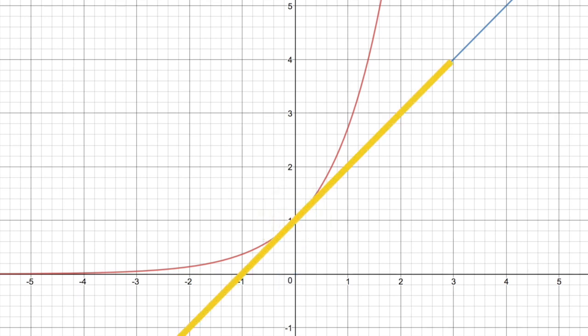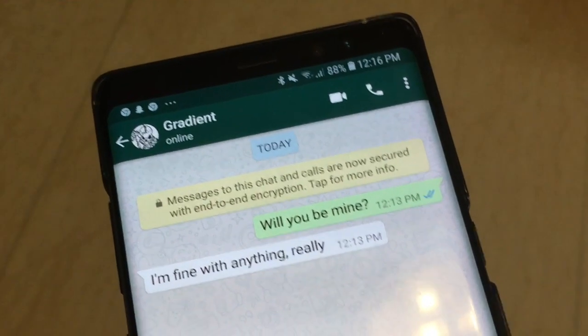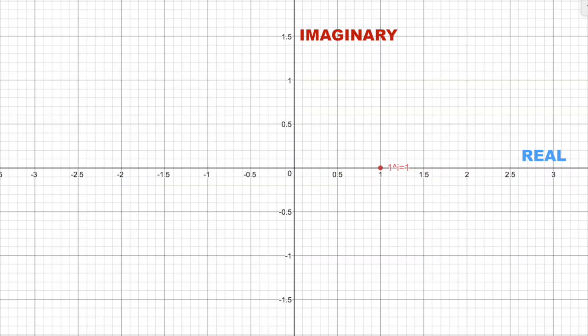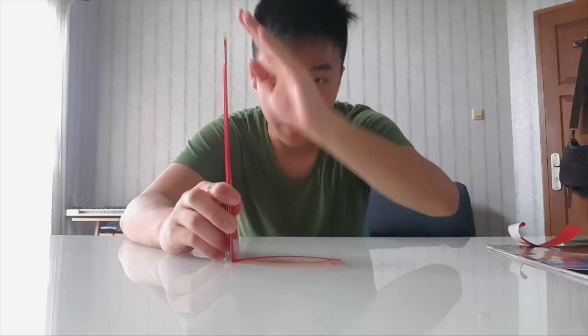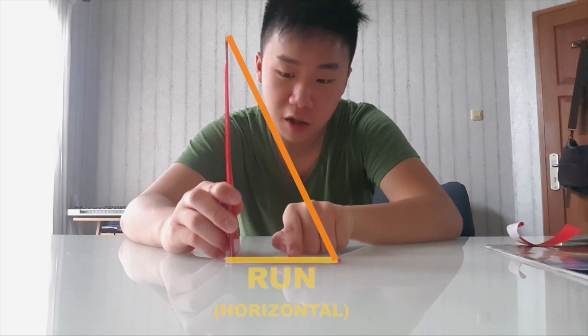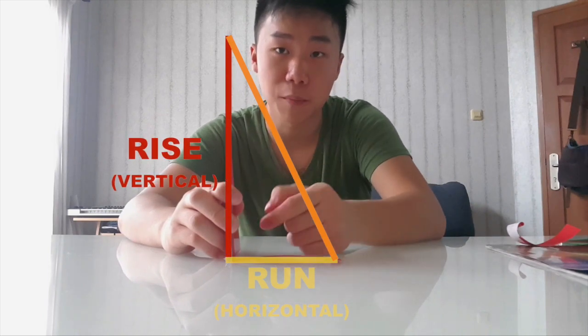The gradient is the only two-dimensional piece of information compatible with the two-dimensional nature of angles and complex numbers. Let's say that we have a gradient here, and this is the run, the horizontal component, and this is the rise, the vertical component.